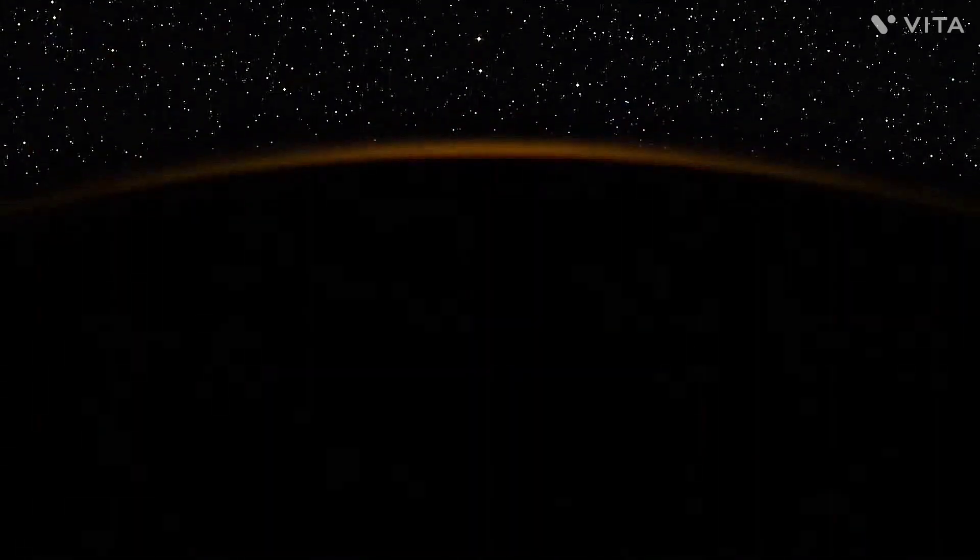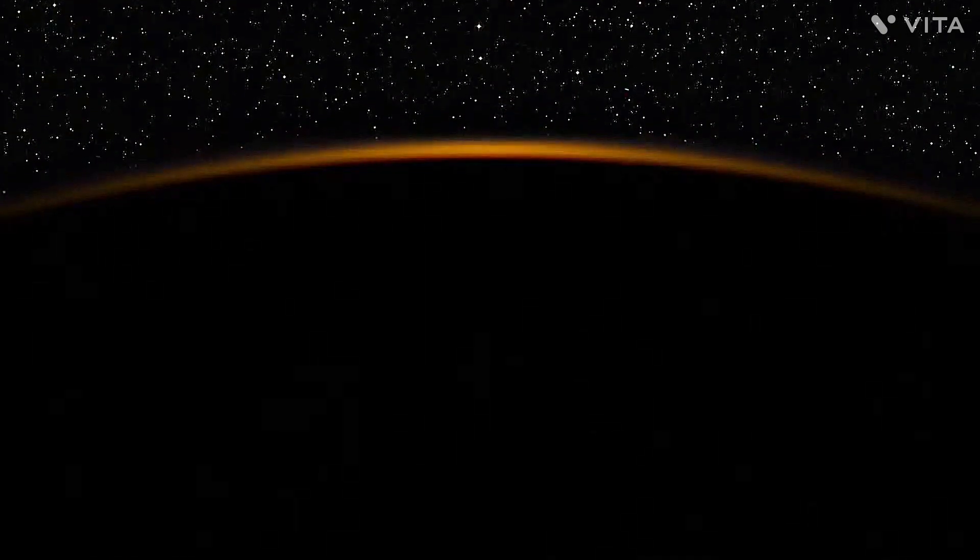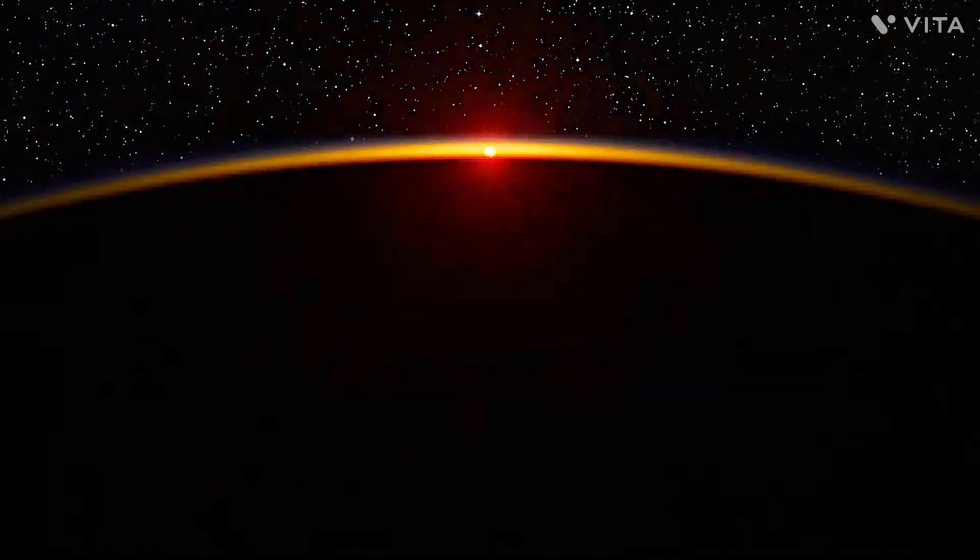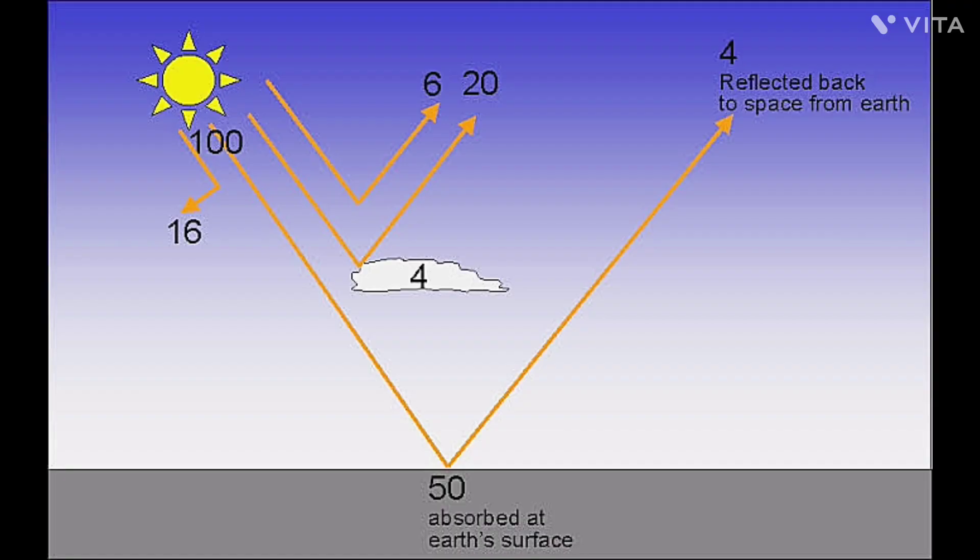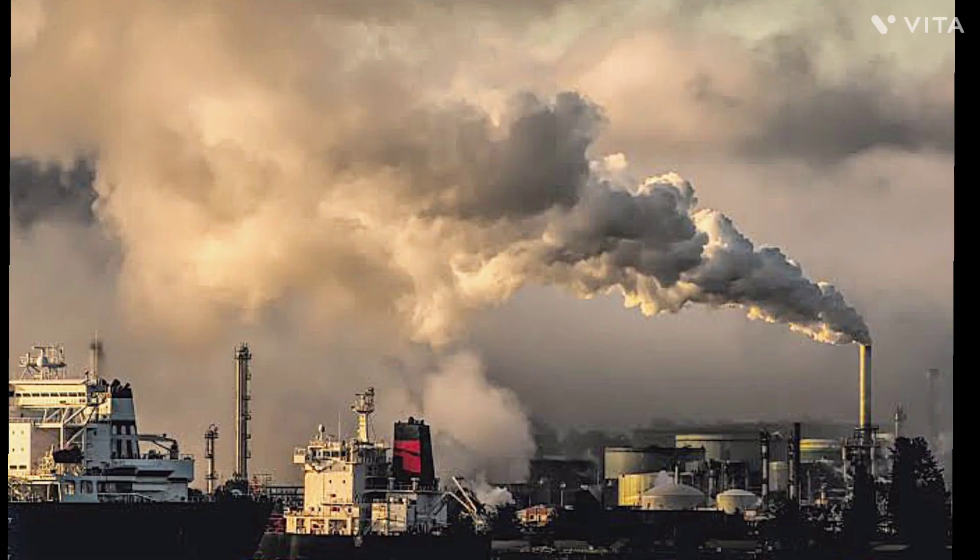About 30% of the solar energy that reaches Earth is reflected back into space. The rest is absorbed into the Earth's atmosphere. The radiation warms the Earth's surface and the surface radiates some of the energy back up in the form of infrared waves.